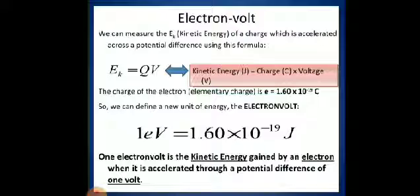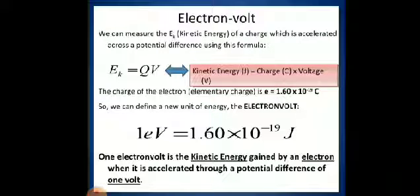It is clear from this equation that electron volt is the unit of energy, and 1 electron volt is the kinetic energy gained by an electron when accelerated through a potential difference of 1 volt.